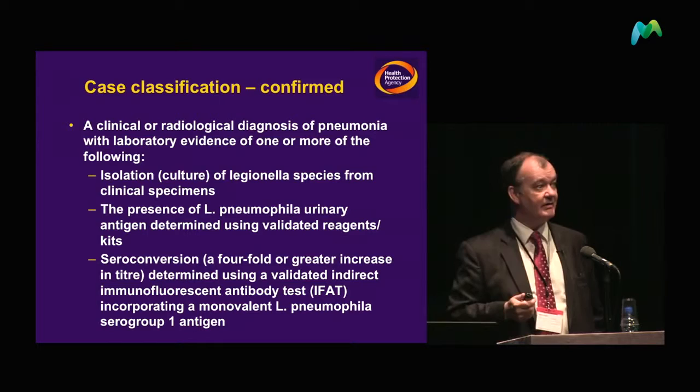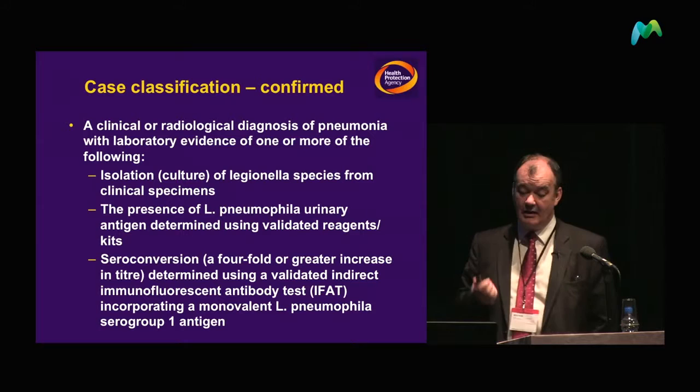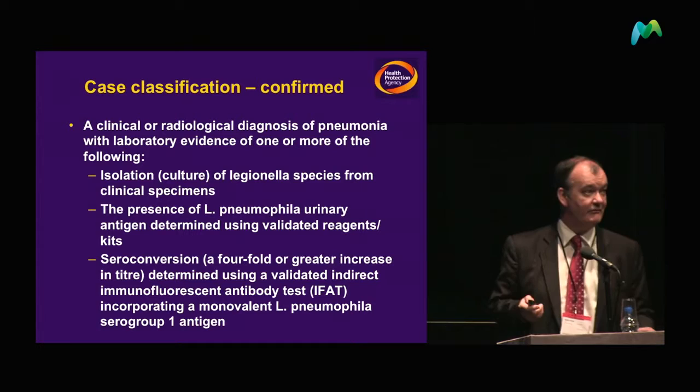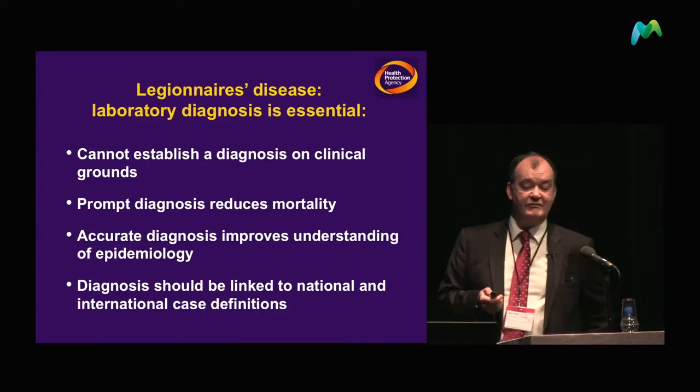Case classification is important because we use a clinical diagnosis plus the presence of one of three microbiological confirmatory tests: either isolation from a clinical specimen, the presence of urinary antigen, or less often now, seroconversion. Serology really plays a very minor role now in Legionella investigations.